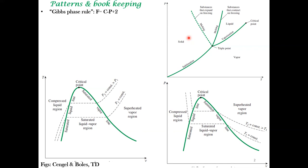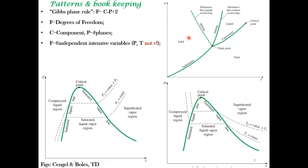It's called the Gibbs Phase Rule, and it connects three things: F, C, and P. F is called the degree of freedom — I'll elaborate. C is the number of components; for example, a single-component system can be water or some other substance. P is the number of phases: in a single-phase region, P equals one; along a coexistence line, P equals two; at the triple point, there are three phases in thermodynamic equilibrium with each other.